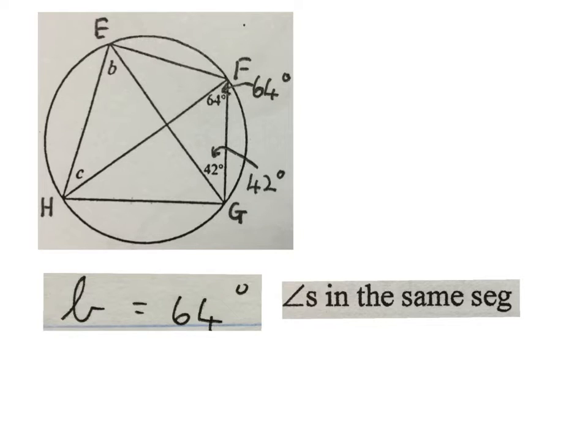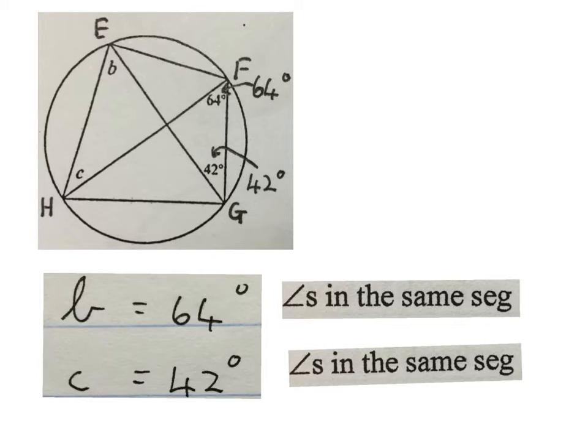Then we say small B equals 64 degrees, angles in the same segment. So this B over here is the same as this 64 over here. Then we see small C is equal to 42 degrees, also angles in the same segment. So this C down here is the same as this 42 down there. Please stop the video and make sure you understand.